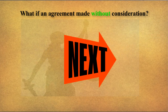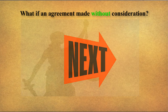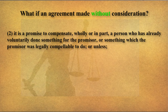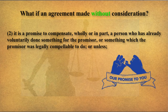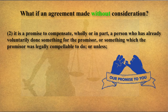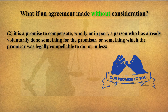The next exception is: a contract without consideration is valid if it is a promise to compensate wholly or in part a person who has already voluntarily done something for the promisor, or something which the promisor was legally compelled to do. Going back to the past consideration example — if something was done in the past, it can be compensated in the present contract. In that case it is valid, because one party is not giving something new — you already owe something to him. That consideration was already done in the past.